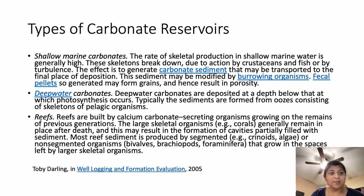Now I'll talk about types of carbonate reservoirs. Shallow marine carbonates: the rate of skeletal production in shallow marine water is generally high. The skeletons break down due to action by crustaceans, fish, or by turbulence. The effect is to generate carbonate sediment that may be transported to the final place of deposition. The sediment may have been modified by burrowing organisms, and fecal pellets so generated may form grains and hence result in porosity.